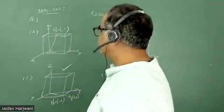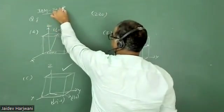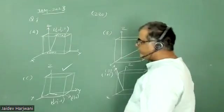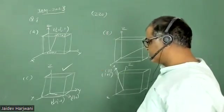Hello students, so let us see this question from JAM 2023, question number 1. They are asking which of the following figure has [2,1,0] direction.